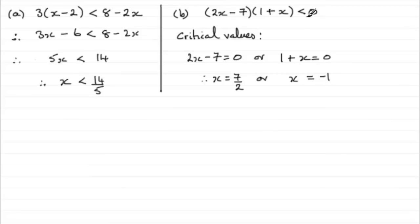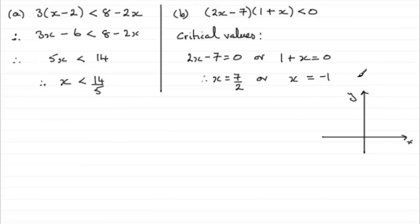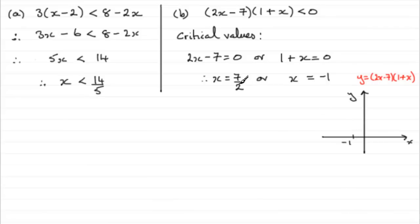This is where this would equal 0, but wouldn't be less than 0. To solve this finally, what I do is draw a graph. Let's just draw our axes here — x and y. And the graph I'm going to be drawing is the graph of y equals 2x minus 7, multiplied by 1 plus x. These critical values are where y equals 0, which is where the graph would cross the x-axis. So it would cross at minus 1 and at 3 and a half, or 7 over 2. It's not drawn to scale, but that doesn't really matter too much.